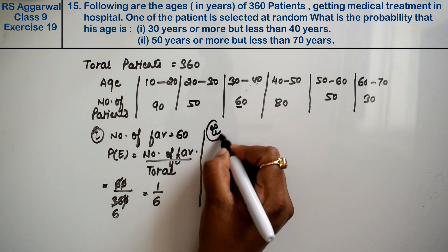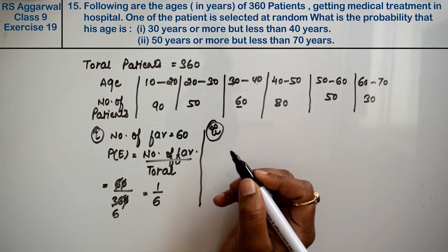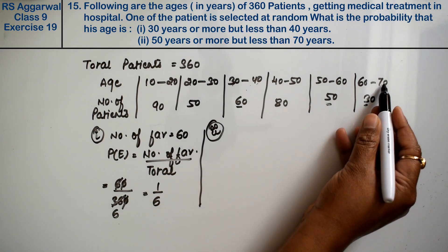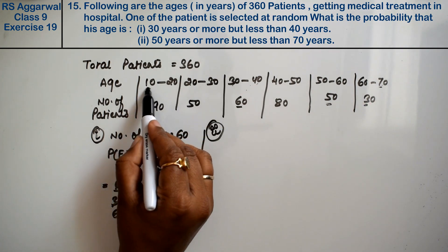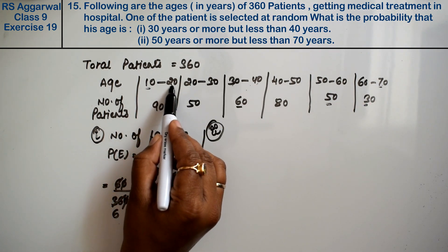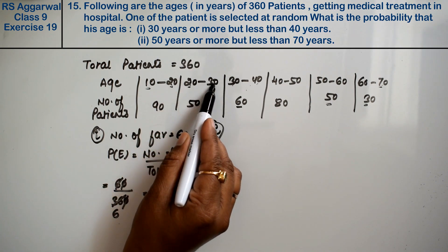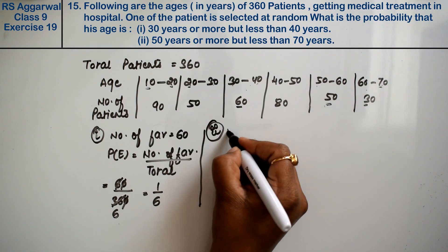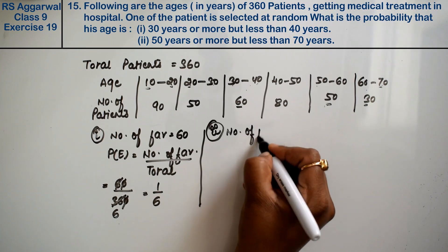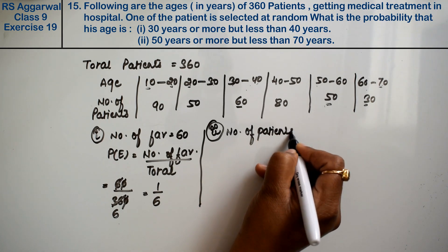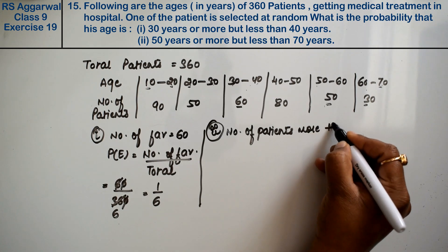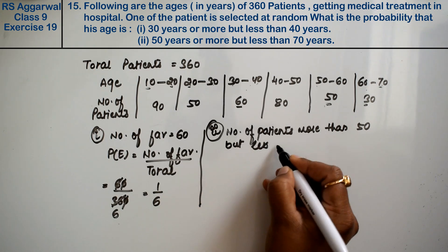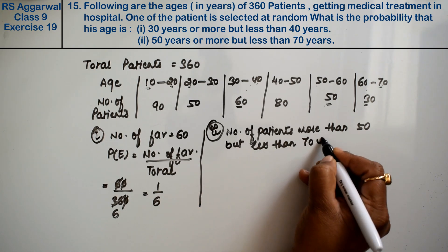Let's do the second part. Second part asks: what is the probability that age is 50 years or more but less than 70 years? So we need patients in the range 50 to 60 and 60 to 70.